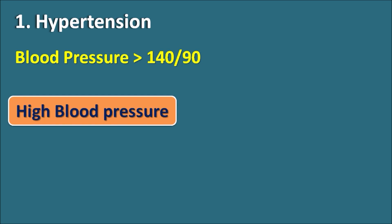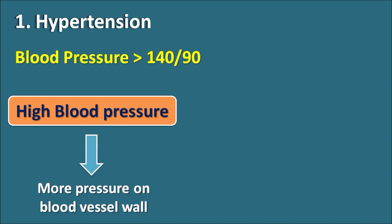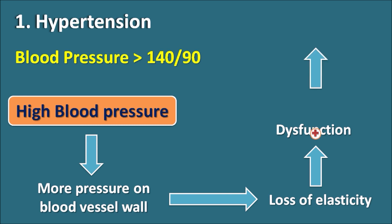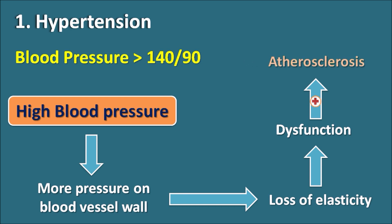Whenever high blood pressure is present, it produces more pressure on the blood vessel wall, causing more stress on those walls. Because of this high pressure, it can cause loss of elasticity of the blood vessel wall, leading to dysfunction in the blood vessels. When there is dysfunction of the vascular smooth muscle and endothelium, it may cause formation of atheroma and induce atherosclerosis. In this way, a patient having high blood pressure for longer periods may develop atherosclerosis due to dysfunction of the walls of the blood vessels.